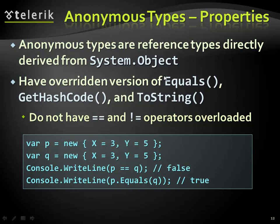Anonymous types derive from System.Object just like any other type in the framework. They have the Equals, ToString, and GetHashCode methods implemented. But they don't have overloaded comparison operators. What we see in this example is that we're creating two types with identical structure and identical data. If we try to compare them directly, they're not the same object — they don't reference the same memory block — so they will not be equal. But if we call Equals, which goes through the properties and compares them, then we'll get true.